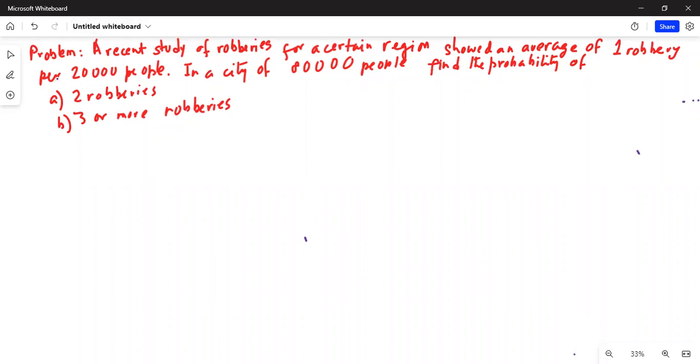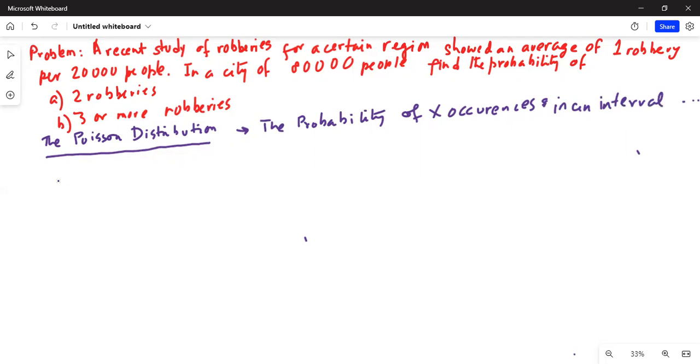This is a problem on Poisson distribution, which states the probability of X occurrences in an interval of time, can be volume, can be area, etc.